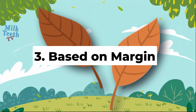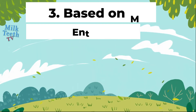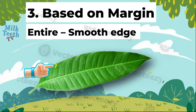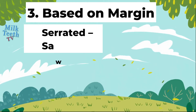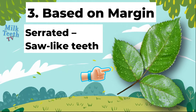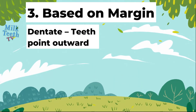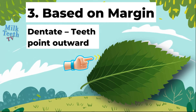Number 3: Leaves can also be classified based on the type of margin of leaves. Based on margin, leaves can be classified as entire — with a smooth edge, for example mango. Number 2: serrated or saw-like teeth margin leaves, for example rose. Leaves may also have a margin with teeth pointing outwards; such leaves are known as dentate, for example mint leaves.